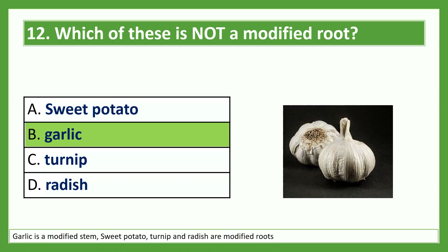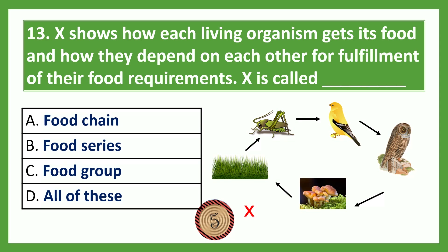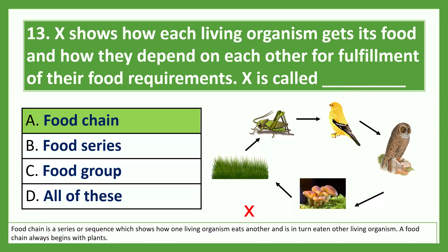X shows how each living organism gets its food and how they depend on each other for fulfillment of their food requirements. X is called — Option A: food chain; Option B: food series; Option C: food group; Option D: all of these. The answer is Option A, food chain. A food chain is a series or sequence which shows one living organism eating another and being in turn eaten by another. A food chain always begins with plants.